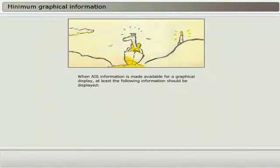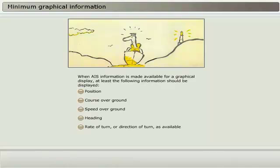When AIS information is made available for a graphical display, at least the following information should be displayed: position, course over ground, speed over ground, heading, rate of turn or direction of turn as available.